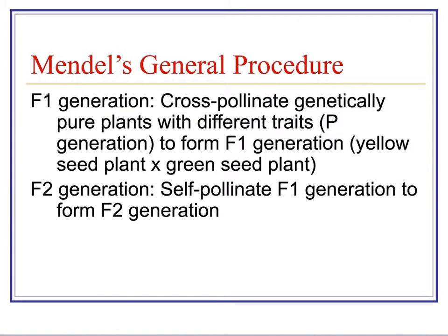Then Mendel took his genetically pure homozygous plants — for example, a plant with yellow seeds and a plant with green seeds — and crossed them together. He called that the F1 generation. The F stands for filial. Then he crossed two of the F1 plants, which all had yellow seeds, to form the F2 generation. So he was dealing with three generations: P generation, which produced the F1 generation, which produced the F2 generation.